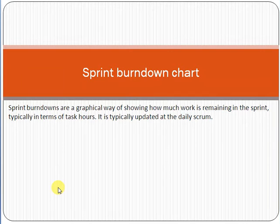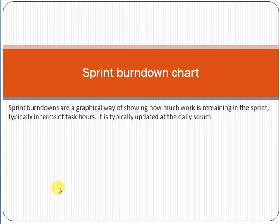This is the concept of the scrum framework. In the scrum framework, we have a chart called the sprint burn down chart. Whenever we start a project using scrum methodology — which is used to manage software projects — a sprint burn down chart is a graphical way of showing how much work is remaining in the sprint, typically in terms of task hours. It is typically updated at the daily scrum.